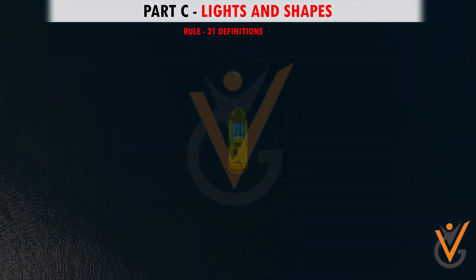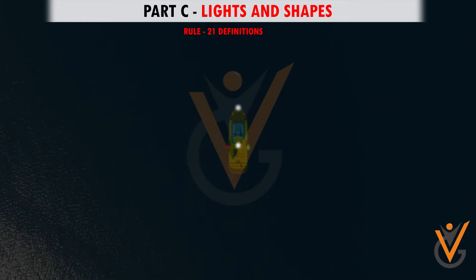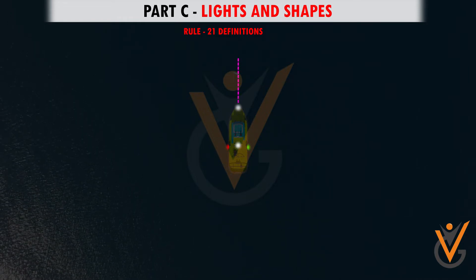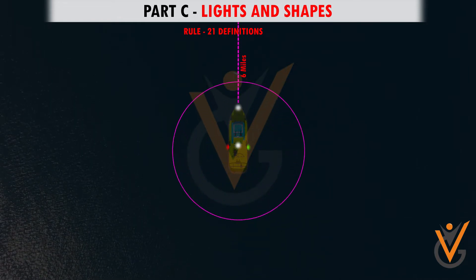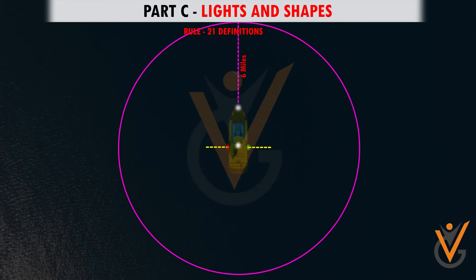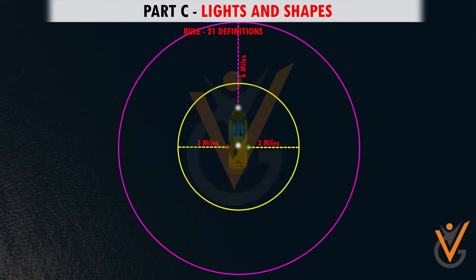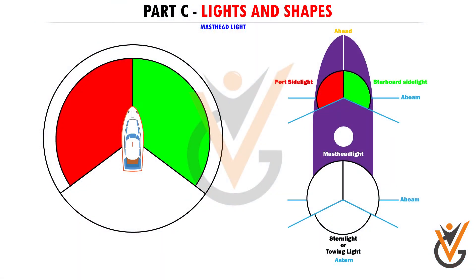Rule 21 — Definitions. This rule defines mast head light, all-round light, and fishing light. It also stipulates that the visibility of mast head light shall be at least 6 miles and all other navigational lights shall be visible for at least 3 miles. Mast head light: a white light placed over the fore and aft centerline of the vessel, showing unbroken light over an arc of 225 degrees, and so fixed as to show the light from right ahead to 22.5 degrees abaft the beam on either side of the vessel.